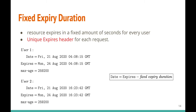The other technique is fixed expiry duration, where resources expire in a fixed number of seconds for every user and the Expires header is unique per request. Both users have the exact same max-age but each has a unique Expires header. For tracking purposes, getting the unique Expires header may be sufficient, but if the attacker wants to know when the resource was cached to build a behavioral profile, she can apply the corresponding formula.